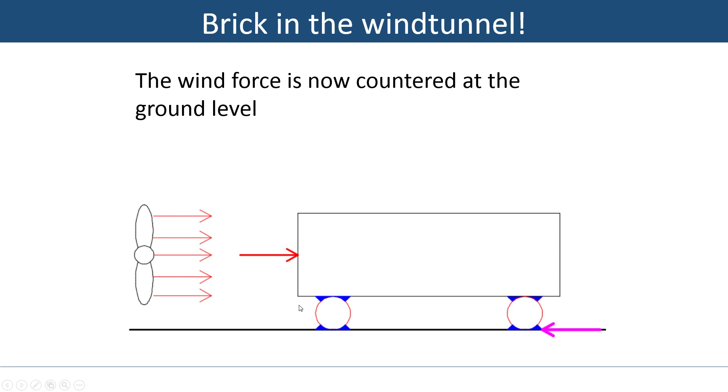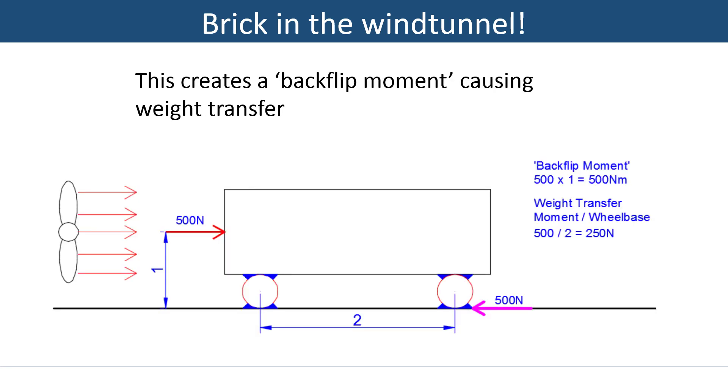Now we cannot just do that - we cannot just glue the car, sorry, brick to the floor of the wind tunnel without a penalty. Because that drag force that applies here is countered only at the floor, at the ground level here, from gluing or wedging, using a wedge or a block or whatever, securing the car, sorry, brick to the floor. So we have a force here and a force there. And if you've paid semi-attention in physics school, that means we get a moment.